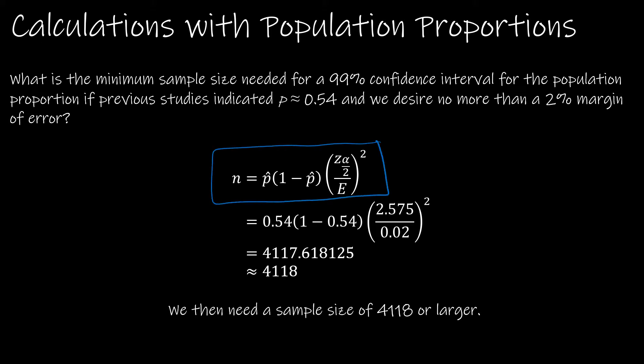The question says what's the minimum sample size needed for a 99% confidence interval for the population proportion if previous studies indicated p is approximately 0.54 and we desire no more than a 2% margin of error. Let's talk about where I came up with all the numbers. p is 0.54, so that's going to go in for p hat, and then I'm going to take 1 minus 0.54 to get 0.46.